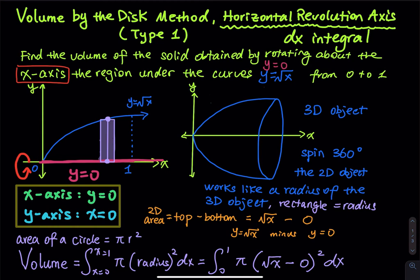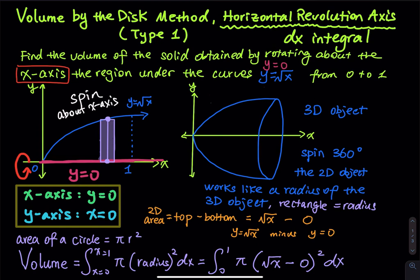You can see a red arrow on the left-hand side indicating the rotation. Rotating about the x-axis means you have the region bounded by y = √x and y = 0, from x = 0 to x = 1. You have a two-dimensional area — think of it like a piece of paper — and you spin it about the x-axis.